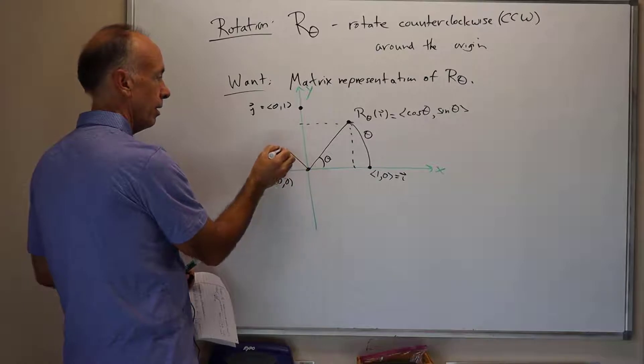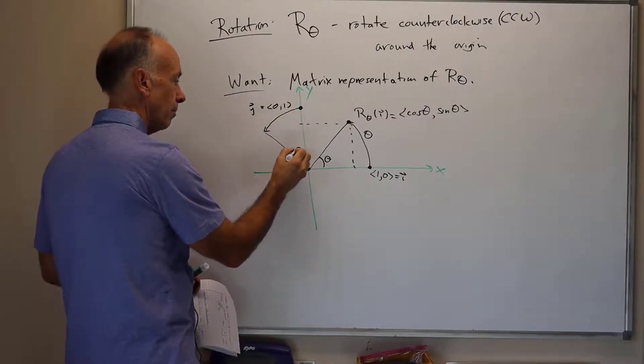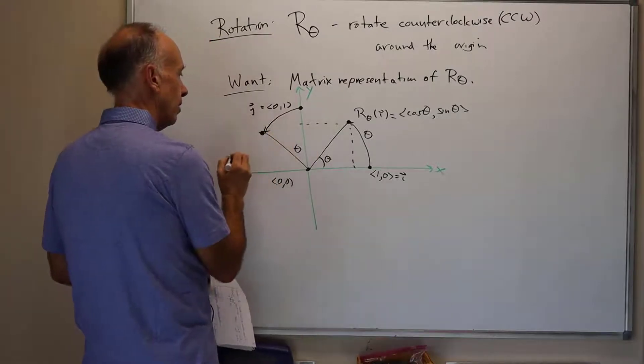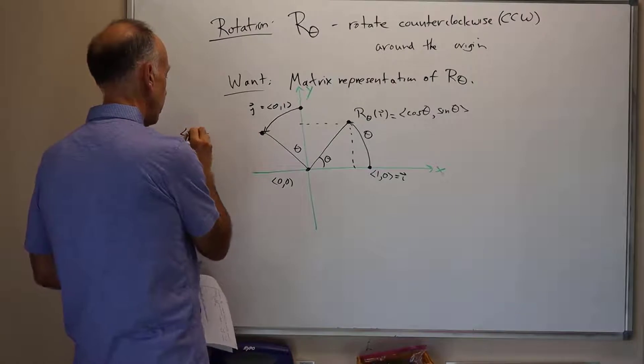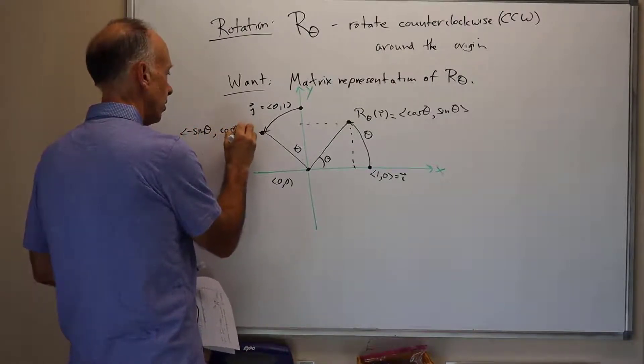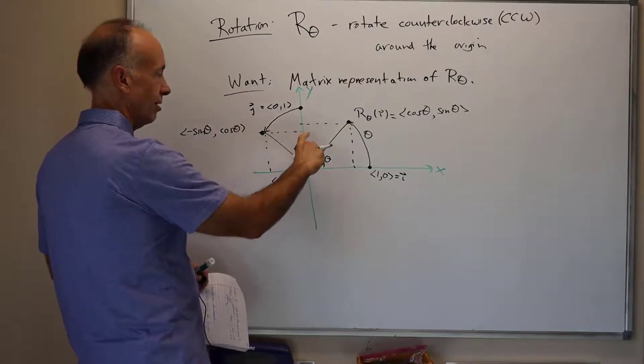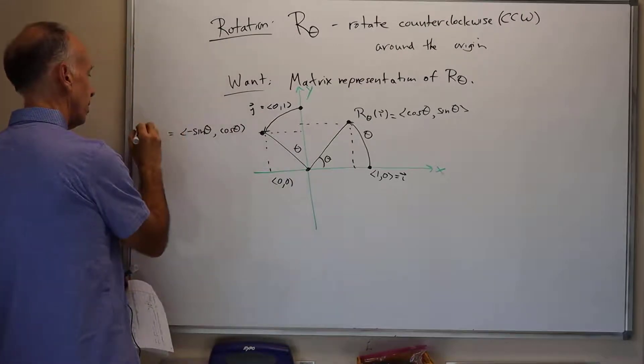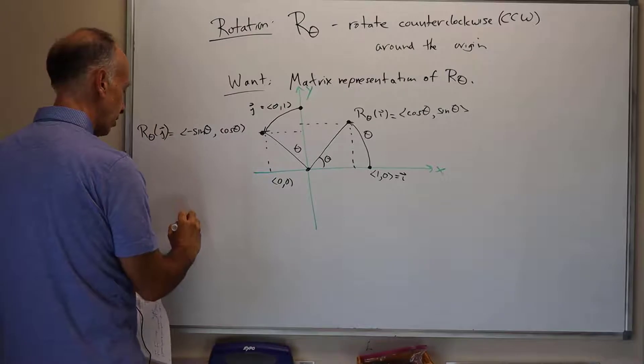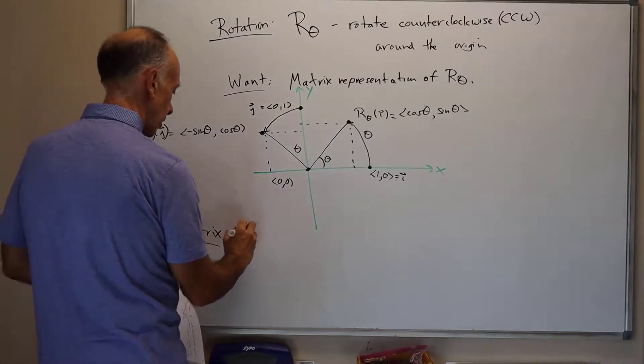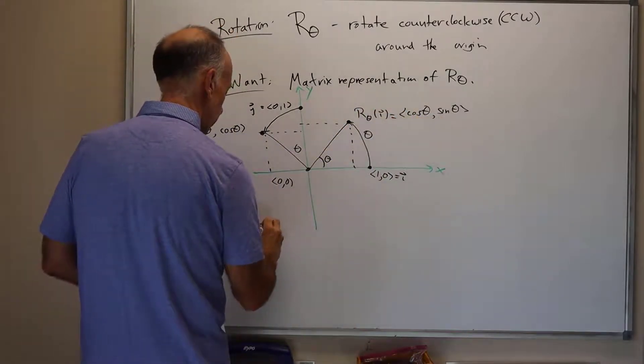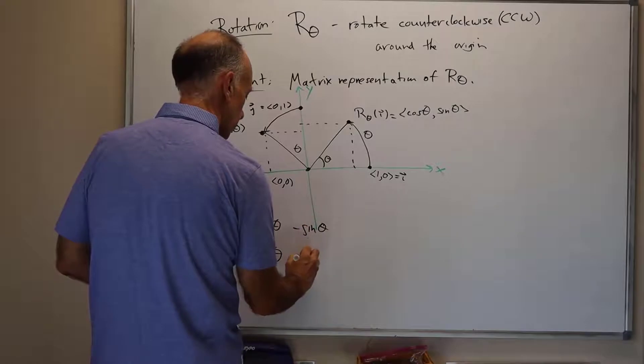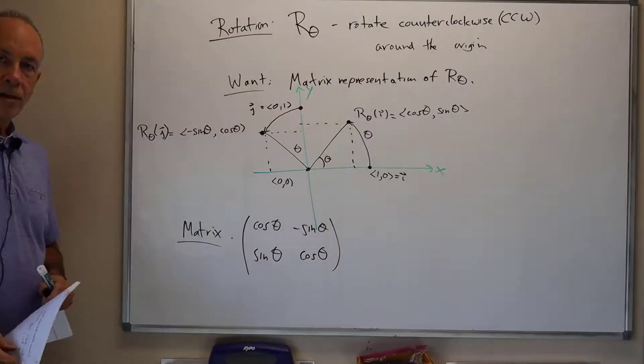Likewise, the point j is going to come angle theta this way. This is going to have component minus sine of theta, cosine of theta. So this is cosine of theta. This is length sine of theta. So x equals minus sine of theta there. This is R theta of j. So the matrix for the rotation is: the first column is cosine theta, sine theta. The second column is minus sine theta, cosine theta. That gives us the 2 by 2 matrix representing the rotation.